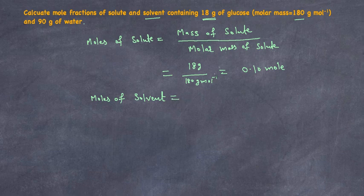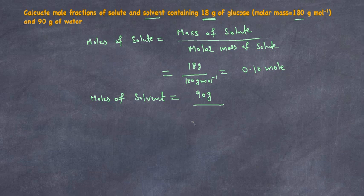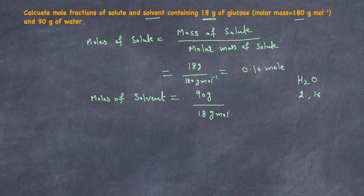Moles of water equals the mass of the solvent, 90 grams, divided by the molar mass of water. The molar mass of H₂O is: hydrogen is 1 times 2 equals 2, plus oxygen is 16, giving 18 grams per mole. So 90 divided by 18 gives 5 moles of water. Now we'll calculate the mole fraction of solute and solvent.